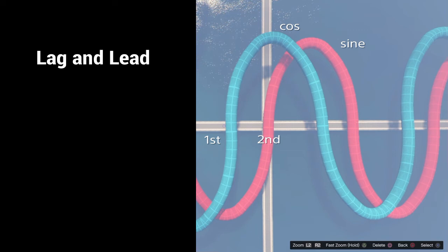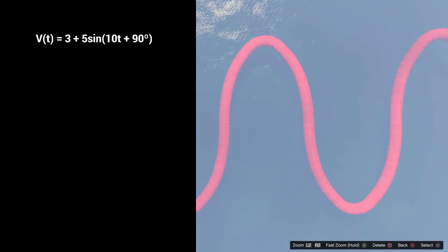We can also say that the sine curve lags the cosine curve. The magnitude of lag and lead is dependent on the difference between the two starting points of each curve.